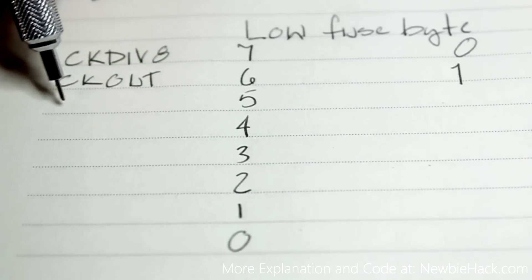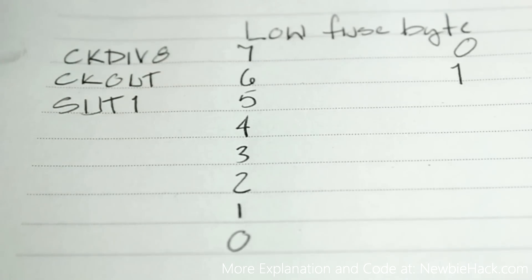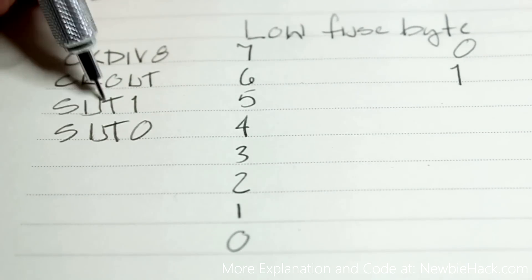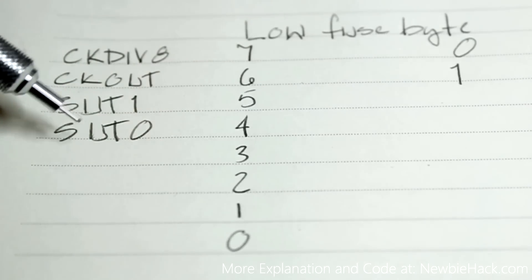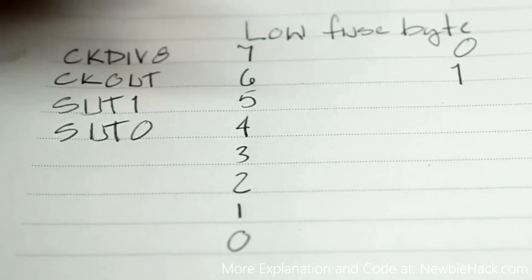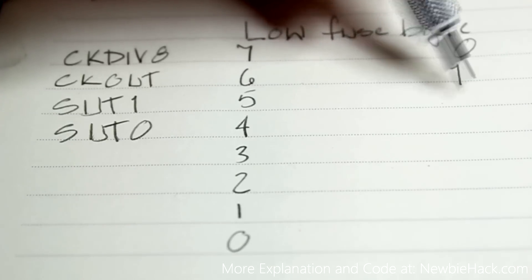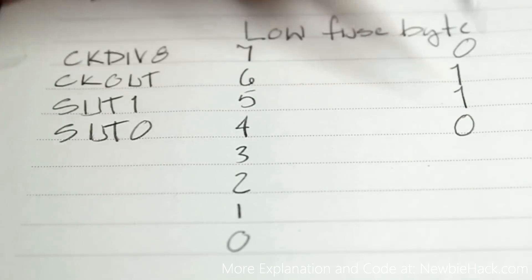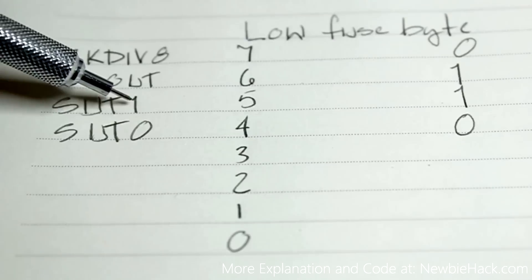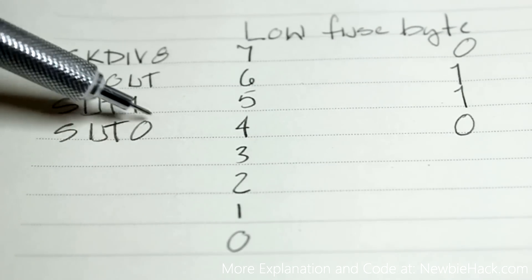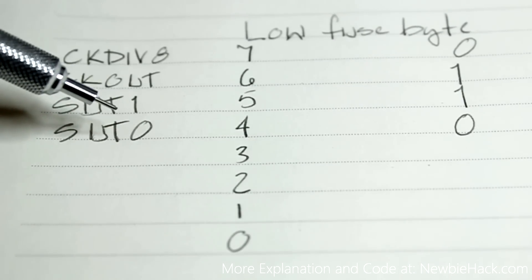The next ones are SUT1 and SUT0, and these are related to each other. These two bits control the startup time for the microcontroller. SUT1 is set as unprogrammed and SUT0 is set as programmed. We'll actually be looking at these in more detail when we're going to be setting an external clock source.